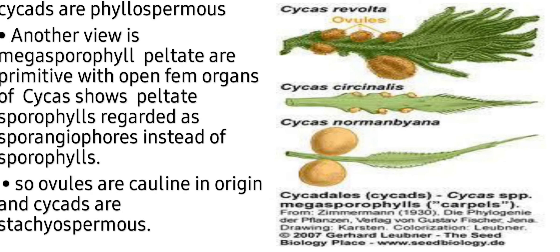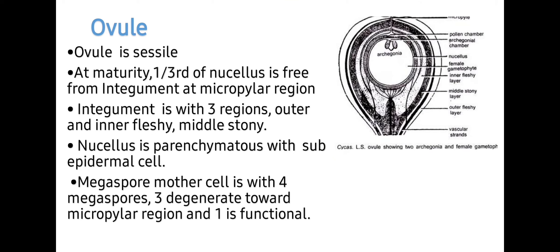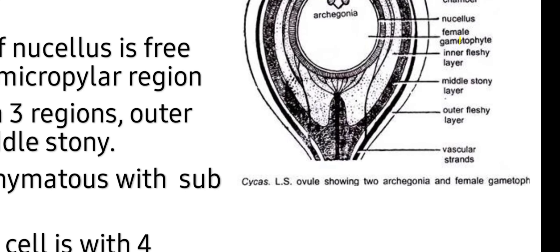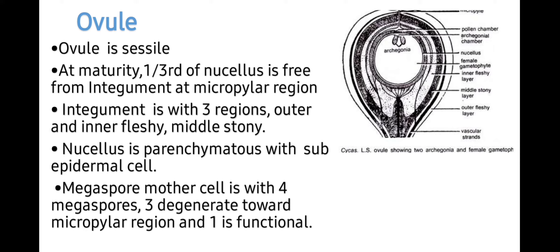Here you can see Cycas revoluta bearing a female cone, Cycas circinalis bearing a female cone, and Cycas normiana bearing ovules. Next is the ovule. The ovule is sessile, i.e., without a stalk. At maturity, one-third of the nucellus is free from the integument at the micropylar end. The nucellus is parenchymatous with sub-epidermal cells. The integument has three regions: outer and inner fleshy, and middle stony layers.